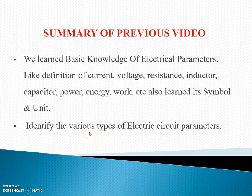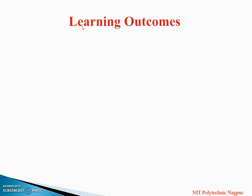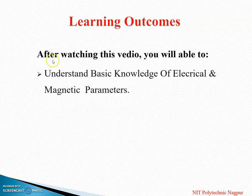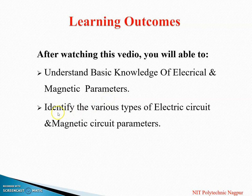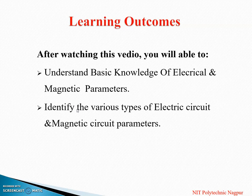In this video, we have studied concept of EMF and parameters of magnetic circuit. Learning outcomes: after watching this video, we will be able to understand basic knowledge of electrical and magnetic parameters, and identify the various types of electric circuit and magnetic circuit parameters. In this unit we have studied basic parameters of magnetic circuit like magnetic flux, magnetic flux intensity, magnetic flux density, permanence, and reluctance.